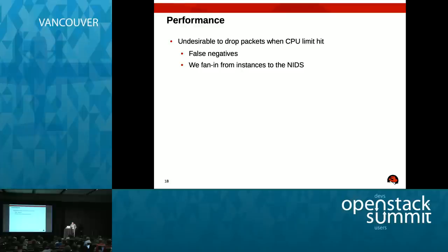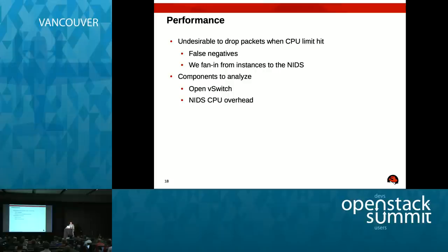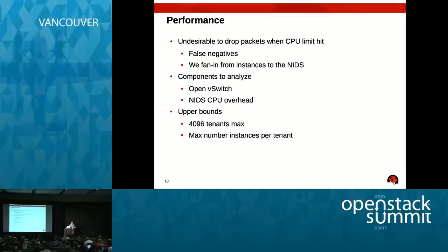Why do we care about performance? If the network IDS CPU power or virtual cores are exceeded, packets will be dropped, leading to false negatives — you may think nothing is wrong when something really is. We're doing fan-in here: taking multiple instances within a tenant and fanning all that traffic into one network IDS. There are upper bounds I haven't approached, but these are key considerations to analyze.